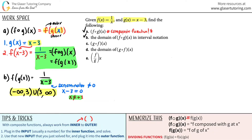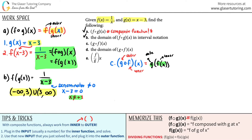Moving on to part c: g composed with f at x. I prefer the notation g of f of x. Here, g is the outer function and f is the inner function. Working from inner to outer, the inner function is f of x, which equals 1 over x.